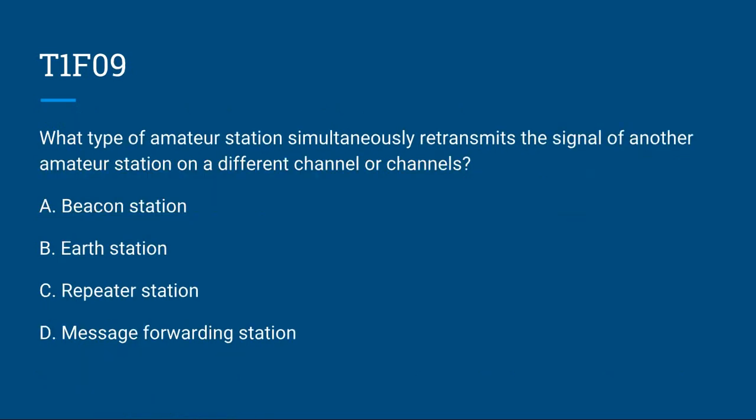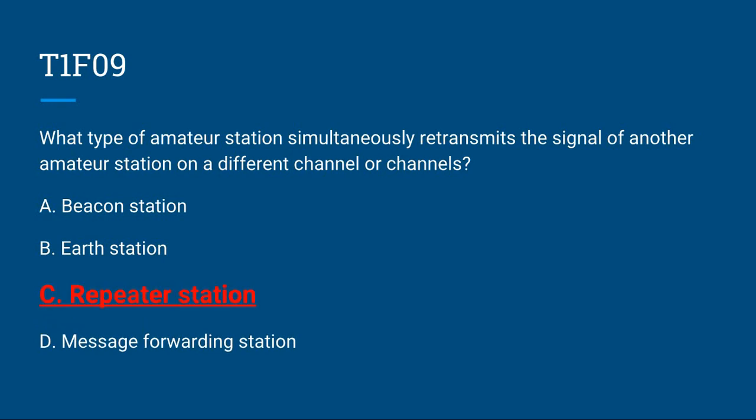T1F09: What type of amateur station simultaneously retransmits the signals of another amateur station on a different channel or channels? A. A beacon station. B. Earth station. C. Repeater station. Or D. Message forwarding station. Correct answer is C: repeater station.